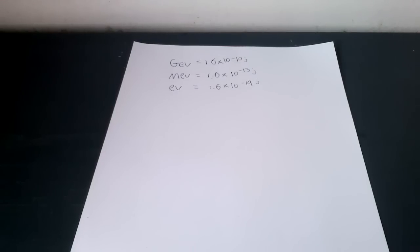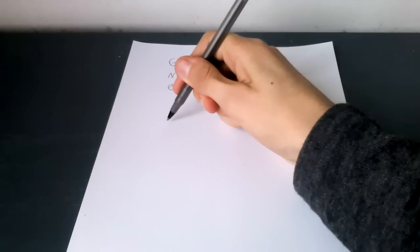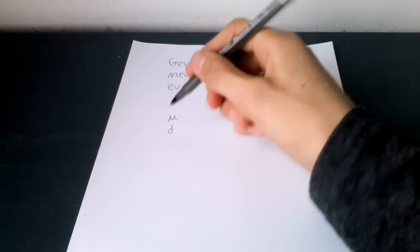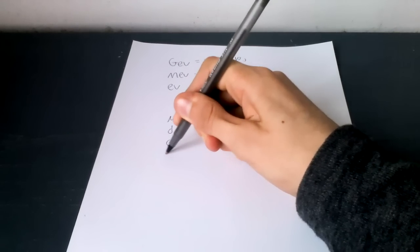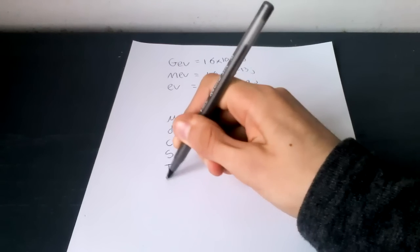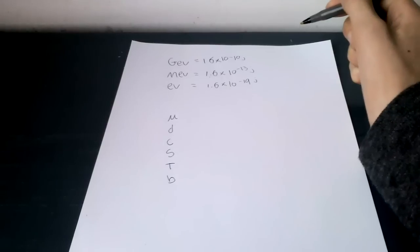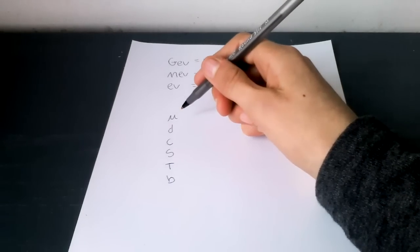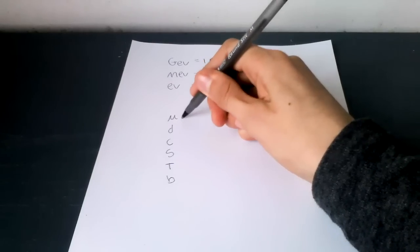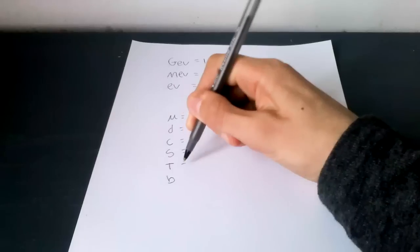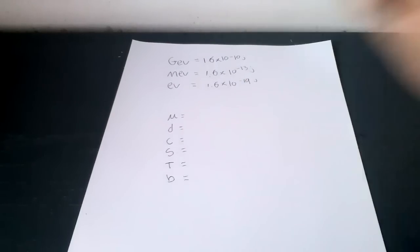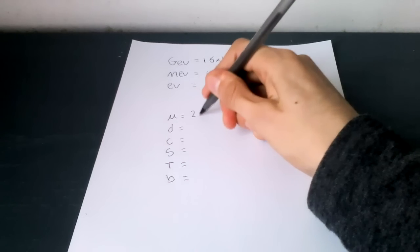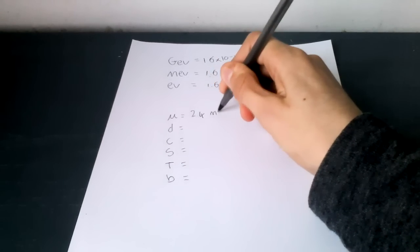So we can look at their masses now. The up quark, down quark, charm quark, strange quark, top quark and bottom quark. There were six flavors, or six quarks, more strictly called flavors. The mass of the up quark is 2.4 MeV.